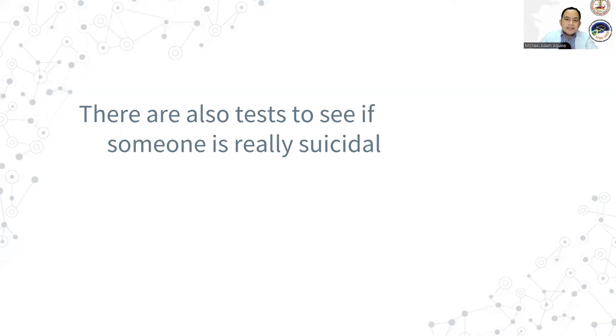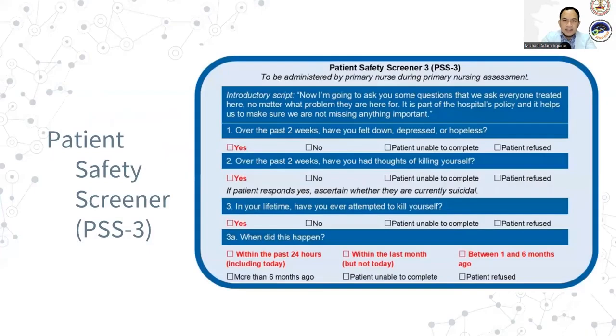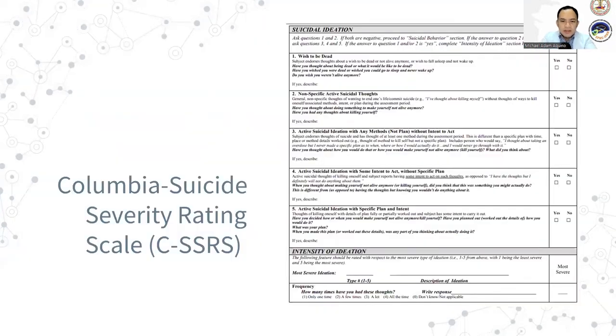There are also tests to see if someone is really suicidal. Here are some examples. The patient safety screener test is a brief screening tool to detect suicide risk in all patients presenting to acute care settings. Providers can administer these tests and identify patients at risk for suicide. We also have the Columbia Suicide Severity Rating Scale, which is a measure used to identify and assess individuals at risk for suicide. It can also be completed as a self-report measure.